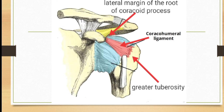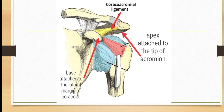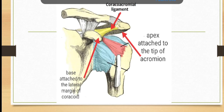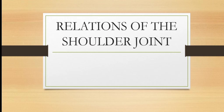The coracohumeral ligament is proximally attached to the lateral margin of the root of the coracoid process and distally to the greater tuberosity of the humerus. The coracoacromial ligament is a triangular band whose apex is attached to the acromion process and the base is attached to the lateral margin of the coracoid process.